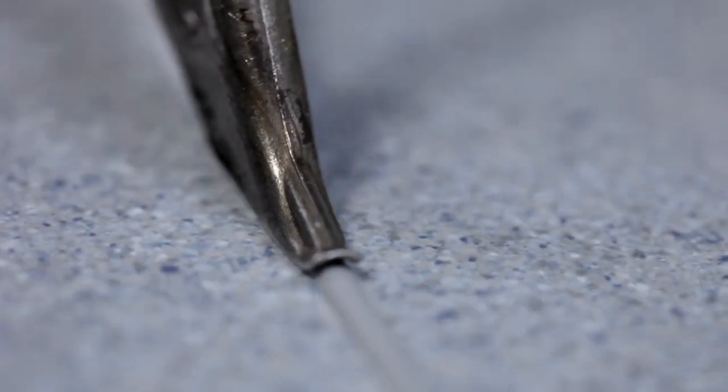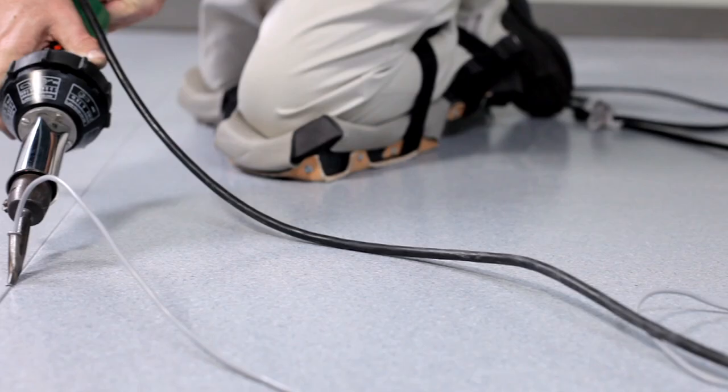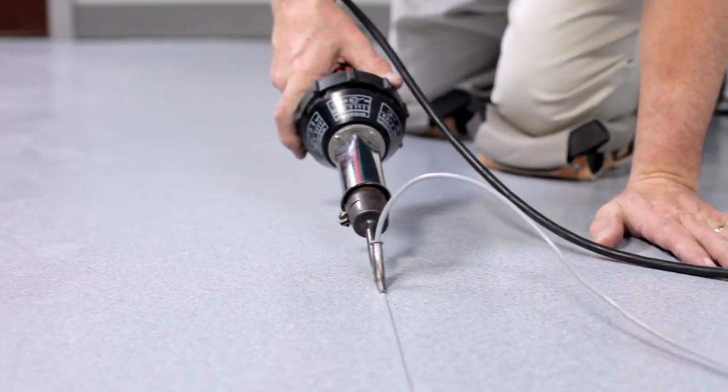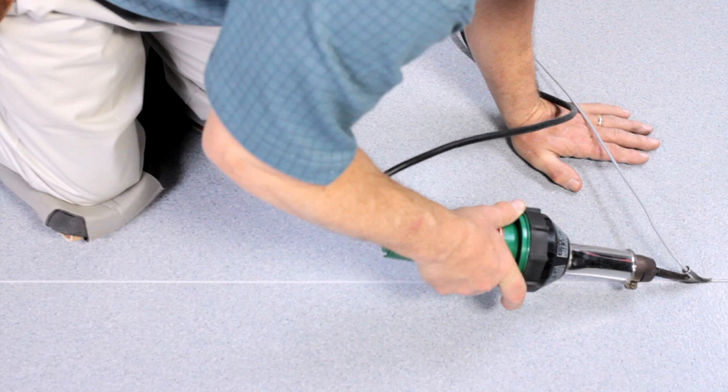The weld rod will be melted into the groove by using a heat gun and a specialized nozzle. The heat gun will melt the seam edges and the weld rod to create a thermo-weld, which fuses the sheets together.